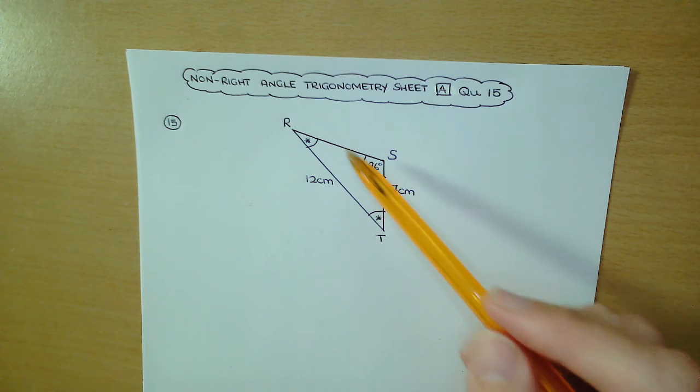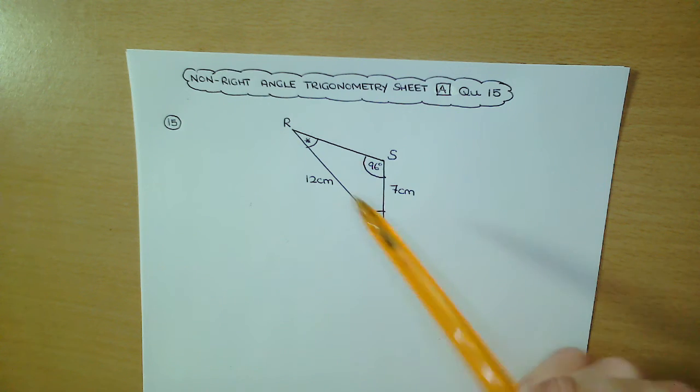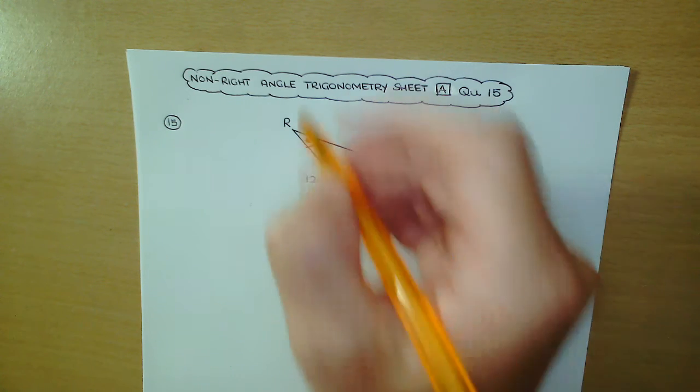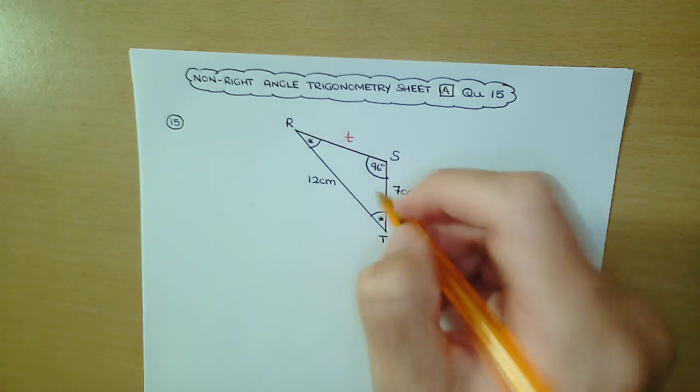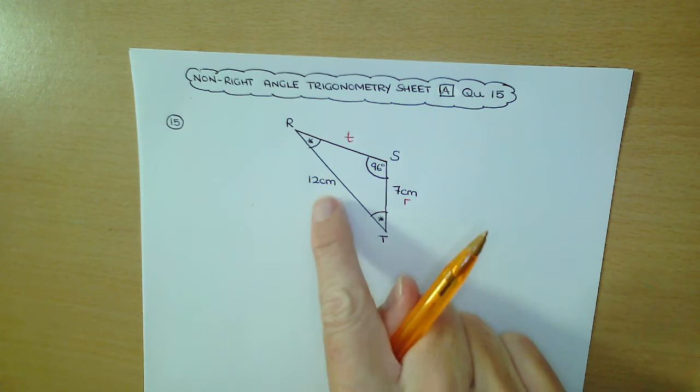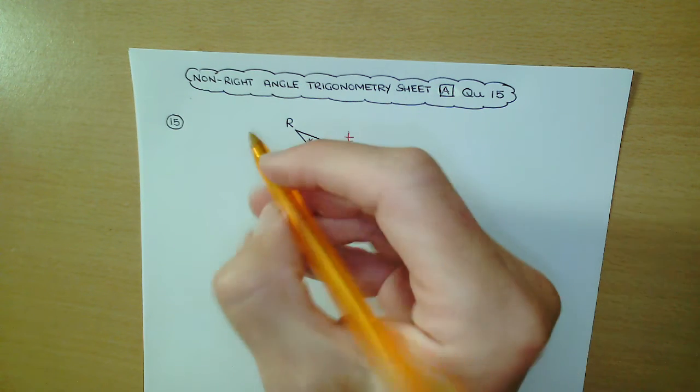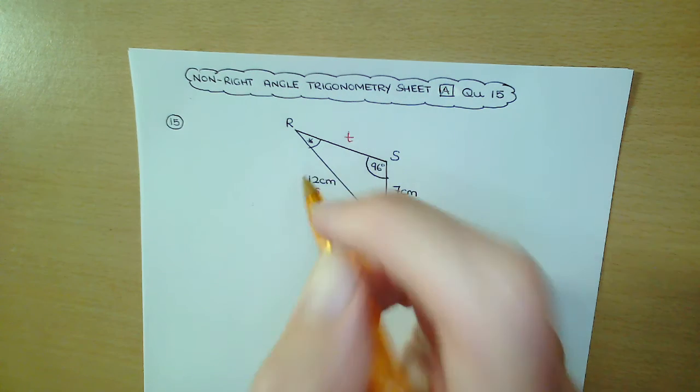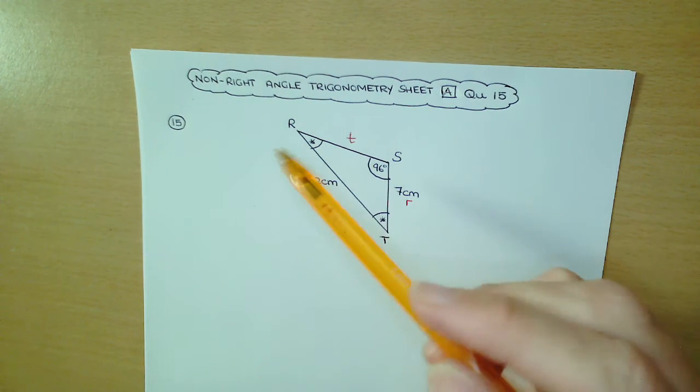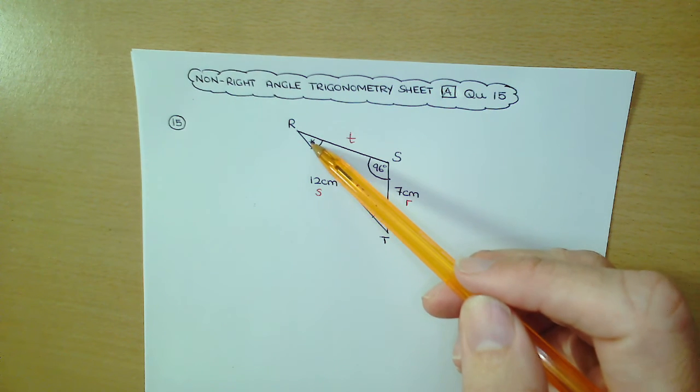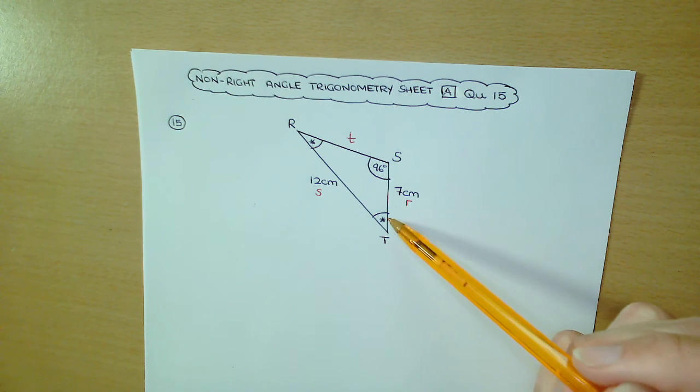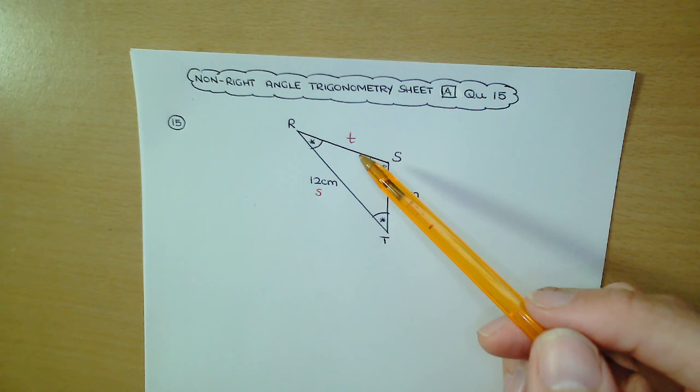First thing we're going to do is label the sides with small letters. The side opposite angle T is small t. The side opposite angle R is small r, and the side opposite angle S is small s. What we can do first is work out one of the two angles, and once we've worked out one of them, then the other angle is easy to find because angles in a triangle add up to 180 degrees.